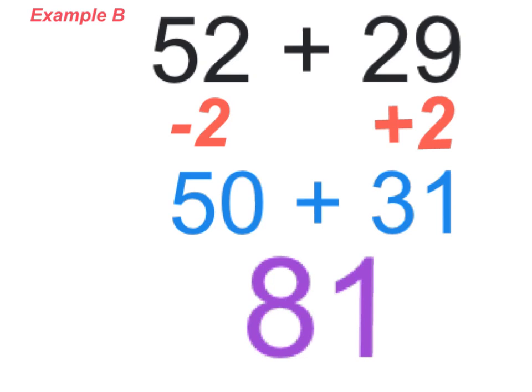It doesn't matter which of the values that you make a multiple of 10 here. Compensation is just a way to try to make adding values easier.